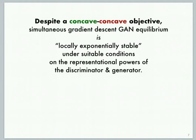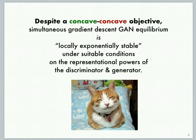Now, our key contribution is to use tools from nonlinear systems theory to show that despite the concave-concavity, the simultaneous gradient descent GAN equilibrium is locally exponentially stable under some conditions.